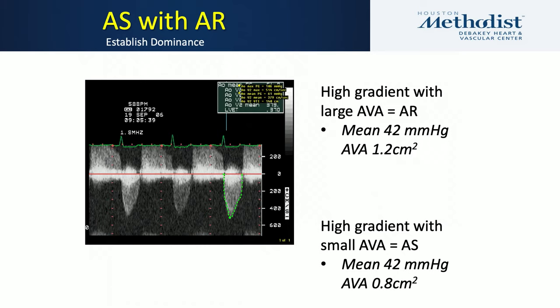Aortic stenosis with aortic regurgitation — simple teaching. On the sawtooth Doppler, if you have a high gradient with a large valve area (in this example 1.2), then aortic regurgitation is probably the more dominant of the two lesions coexisting within this valve. If there's a high gradient and a small calculated aortic valve area (such as 0.8), then aortic stenosis is probably the more dominant lesion. This is an example of why having multiple measures — mean gradient, peak velocity, valve area, DVI — is useful.